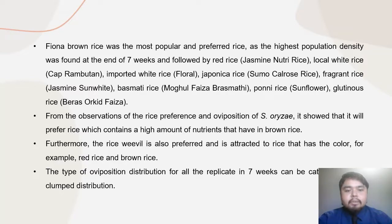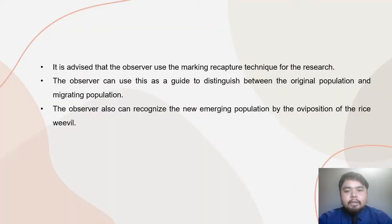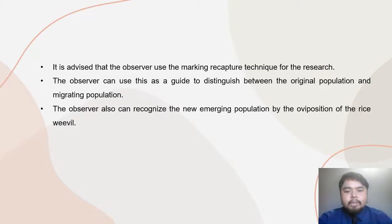The type of oviposition distribution for all replicates across several weeks can be categorized into clumped distribution. This study can be used to determine population growth while implementing a natural, workable, and environmentally responsible pest management strategy. For recommendations for further studies, it is advised that the observer uses the mark-recapture technique. The researcher would apply a marker to the Sitophilus oryzae. Materials and techniques used to mark insects include mutilation marking, paint and ink marking, and dye marking. The observer can use this to distinguish between the original population and migrating population, and can also recognize the new emerging population by the oviposition of the rice weevil.